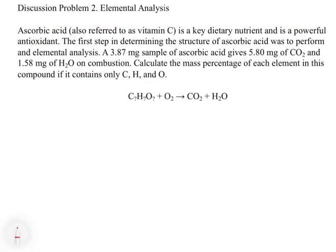Here's discussion problem 2, which involves elemental analysis. Ascorbic acid — also referred to as vitamin C — is a key dietary nutrient and powerful antioxidant. The first step in determining its structure was to perform an elemental analysis. We take 3.87 milligrams of ascorbic acid, and this gives 5.80 milligrams of CO₂ and 1.58 milligrams of H₂O on combustion. The carbon in that 5.80 milligrams of CO₂ had to have been in the original sample, and the hydrogen in the water had to have come from the original sample also.